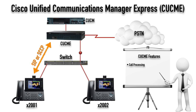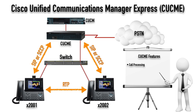Let's talk about how we actually get the session set up. The SKINNY and SIP protocols go between the phones and our call agent - between the phones and Cisco Unified Communications Manager Express. These are the signaling protocols. They say: 'I want to set up a call with this number. Here are the codecs I support - the way we encode our voice. Here's the UDP port number I'm going to use to send my voice.'